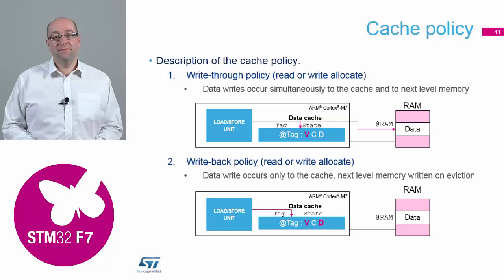The write-through policy is probably going to be the most widely used within your application. This means every time you access the cache, it will also send the same information out to the external memory. Your cache is running internally in the core, but this is on the external bus matrix, which might not respond as fast as the cache. So there will be a time penalty when you do this write-through, and you'll lose a bit of the performance of just using the cache on its own.